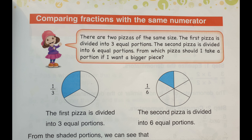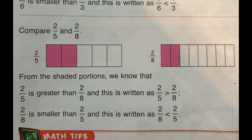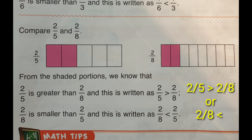Now, what about comparing fractions with the same numerator? From the shaded portions we can see that one third is greater than one sixth, and one sixth is smaller than one third. Second example: compare two fifths and two eighths. From the shaded portions, two fifths is greater than two eighths, or two eighths is smaller than two fifths.